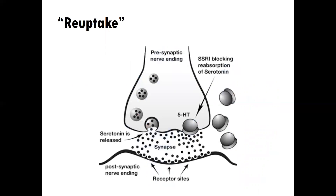This is an example of reuptake. The process of reuptake is one in which neurotransmitters are reabsorbed by the original axon terminal button that released them into the synaptic cleft. When the neurotransmitter is not received by the receptor sites on the dendrite, it can be reabsorbed — and that's the process known as reuptake. You'll notice here that on the right-hand side of the axon terminal button, there is a kind of blockage — it says SSRI blocking reabsorption of serotonin.